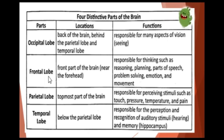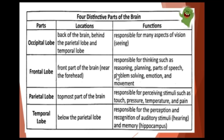For the frontal lobe, the location is the front part of the brain, near the forehead. The functions: it is responsible for thinking, such as reasoning, planning, parts of speech, problem solving, emotion, and movement.